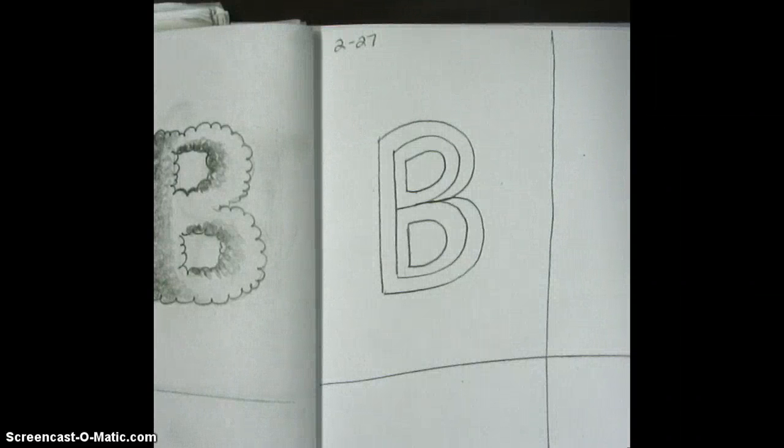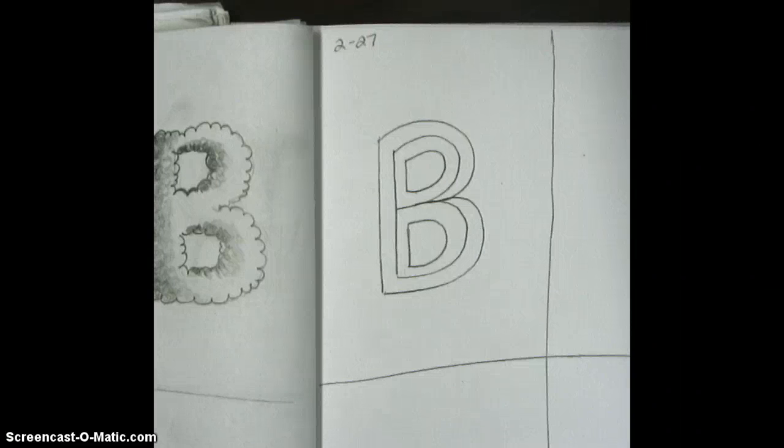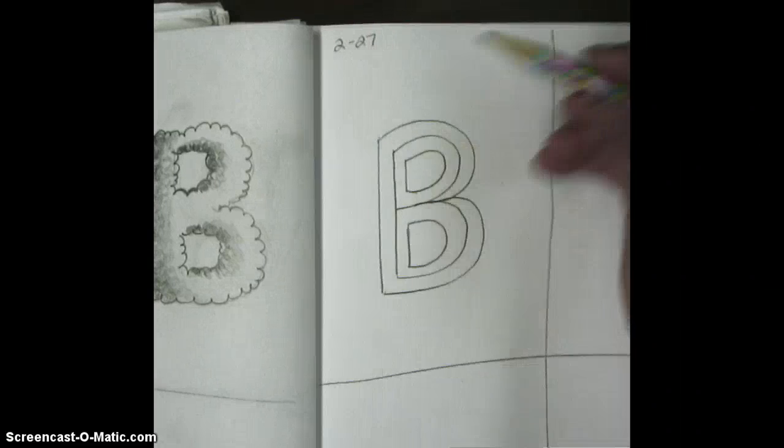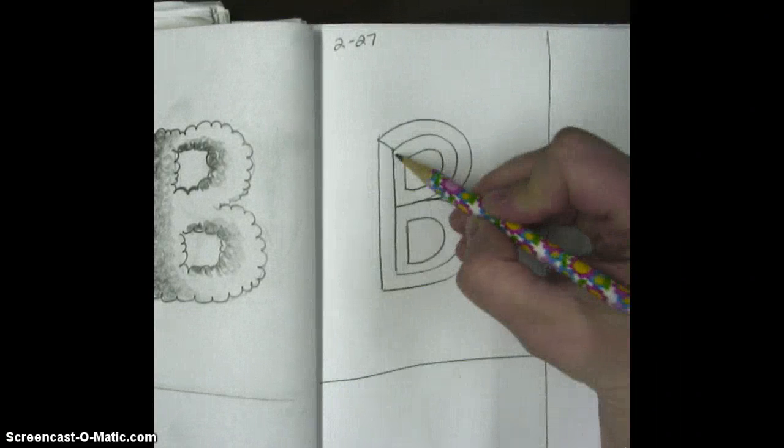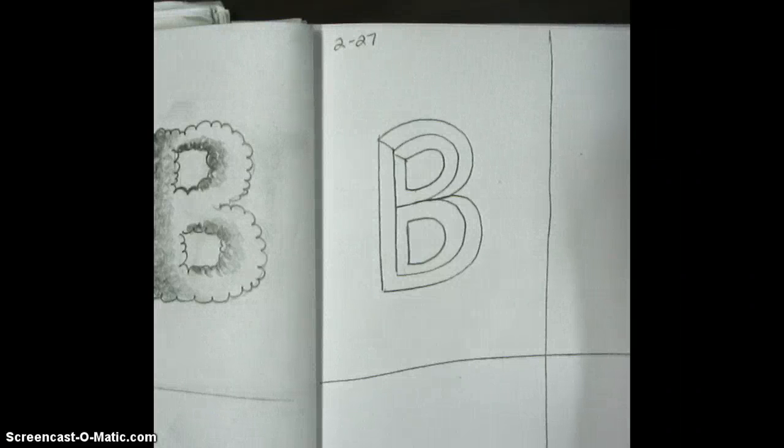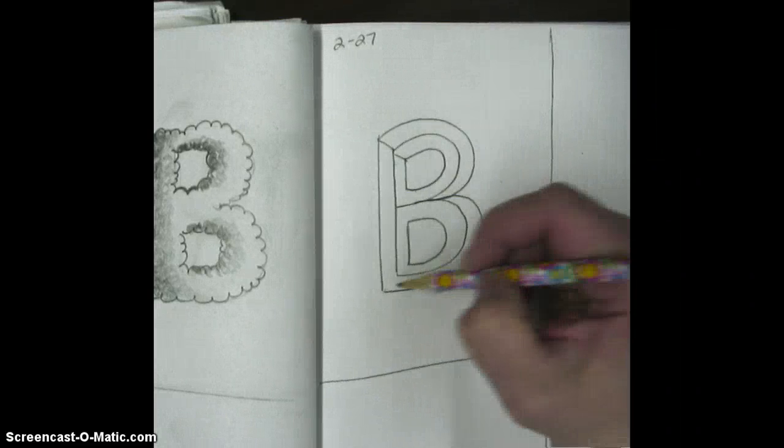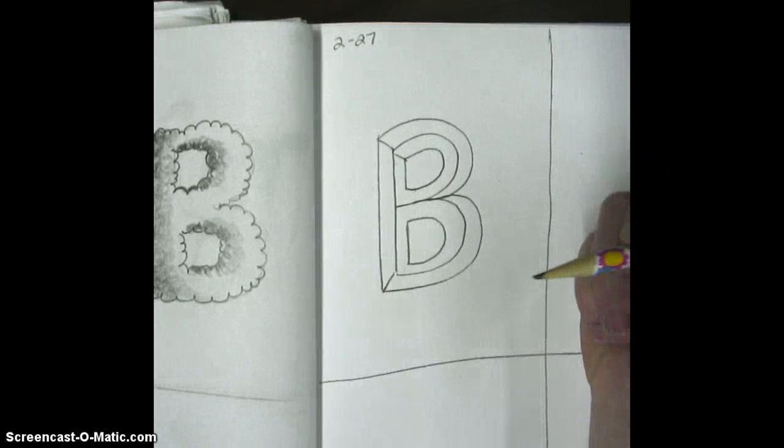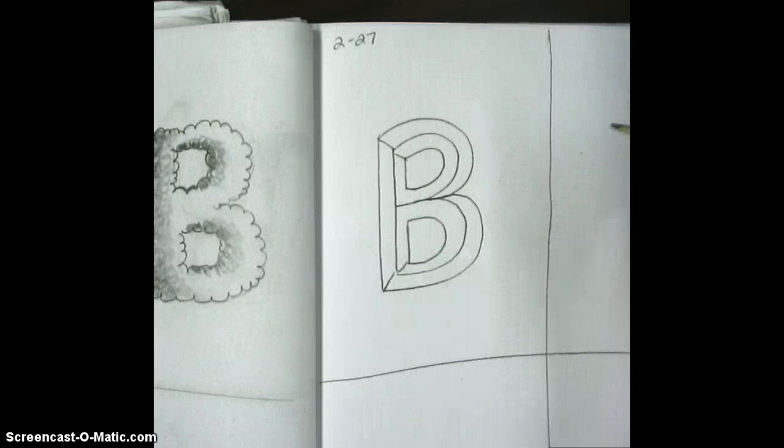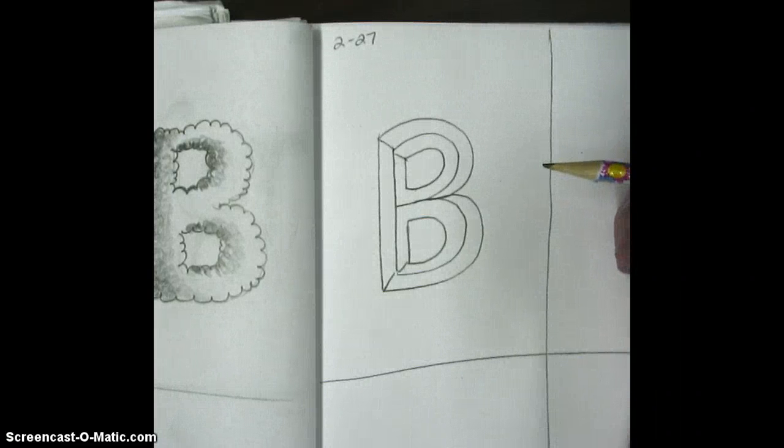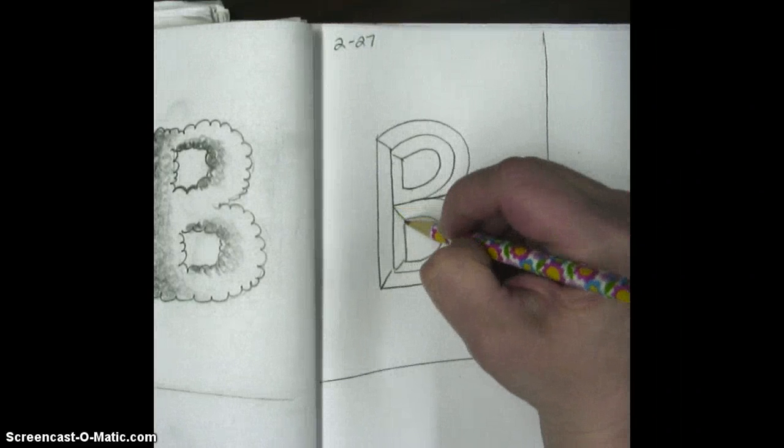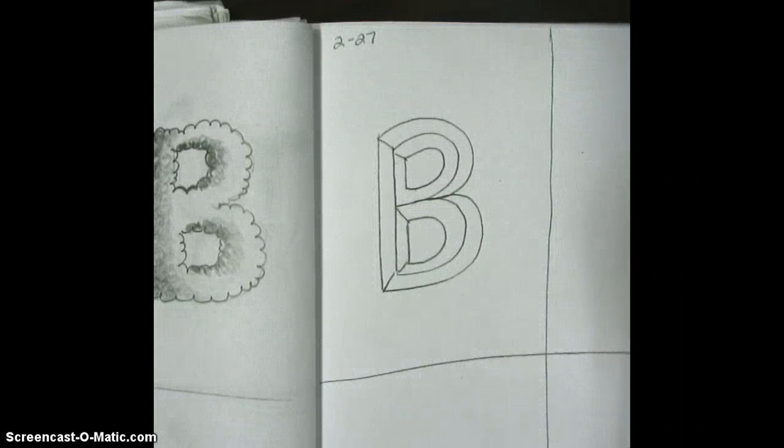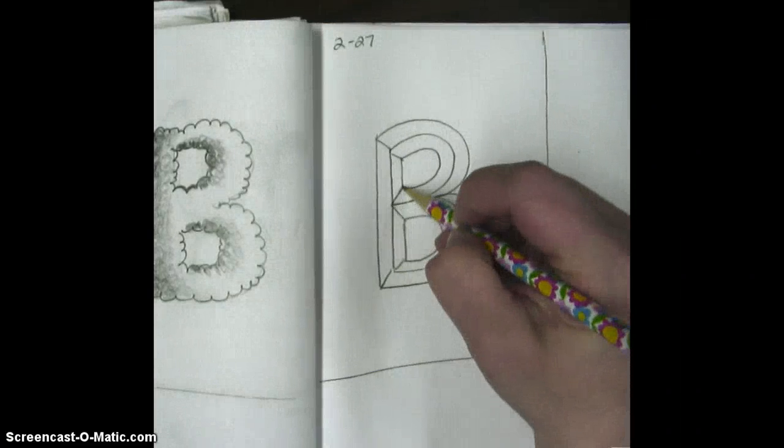Now we just need to put some angles in and some shading, and we'll be done. We're going to have an angle at the top, here, and here. We're also going to have an angle at the bottom, here, and here. And then lastly, we're going to have an angle between this point and this point, and this point and this point.